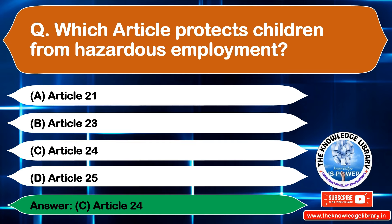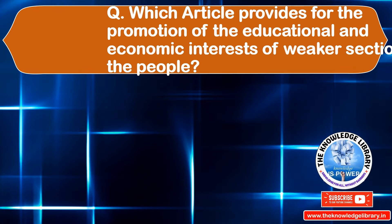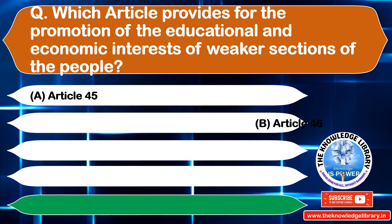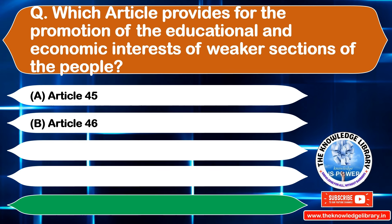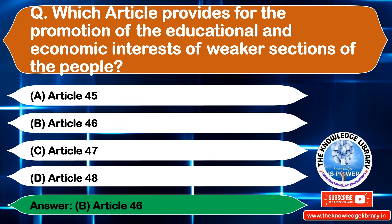The next question is: which article provides for the promotion of the education and economic interest of weaker sections of the people? Option A: Article 45, Option B: Article 46, Option C: Article 47, Option D: Article 48. The correct answer is Option B: Article 46.